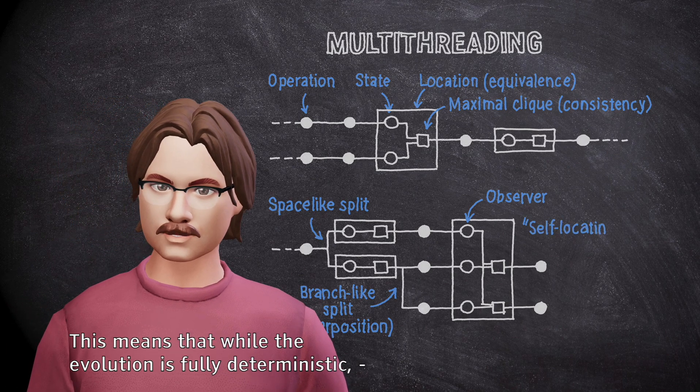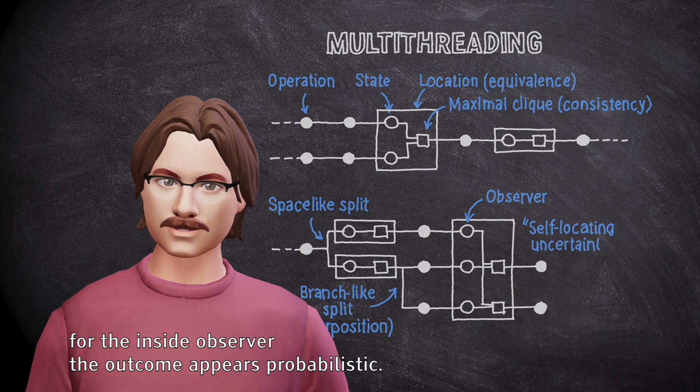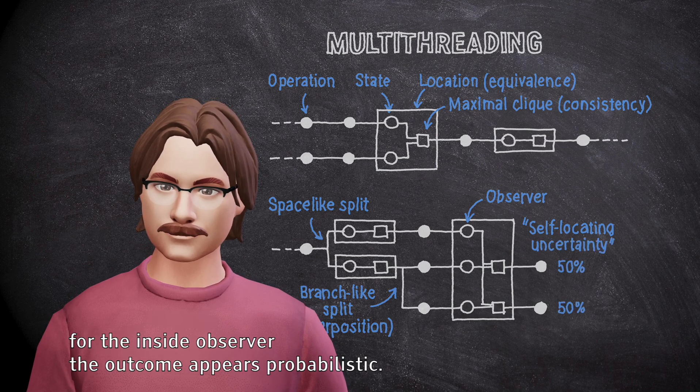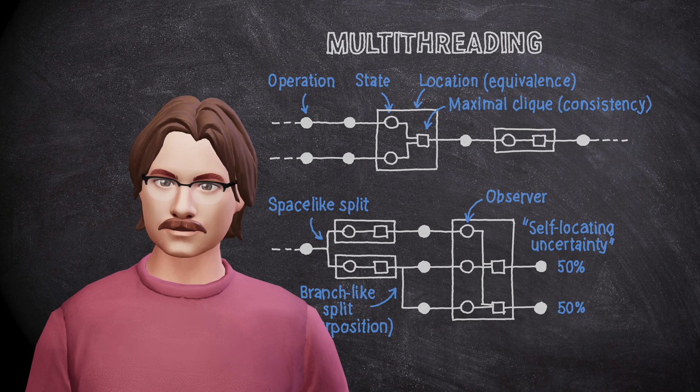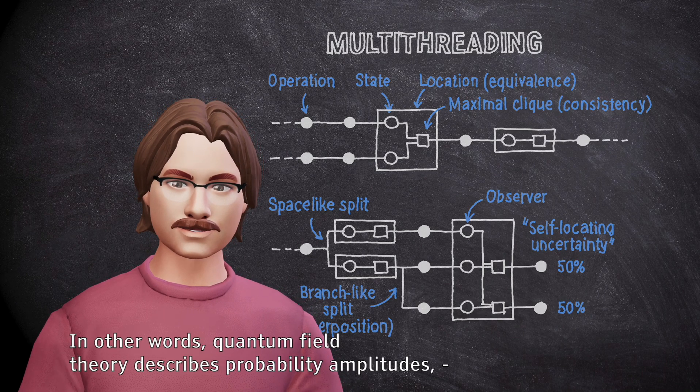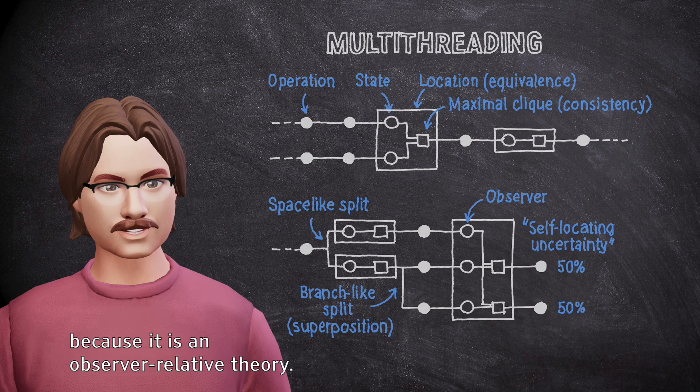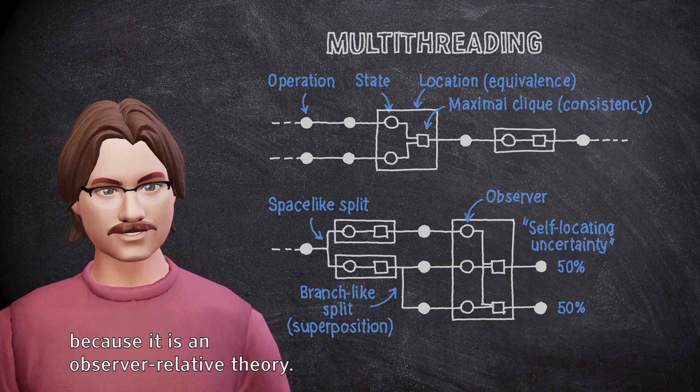This means that while the evolution is fully deterministic, for the inside observer the outcome appears probabilistic. In other words, quantum field theory describes probability amplitudes because it is an observer relative theory.